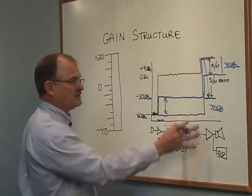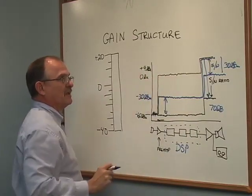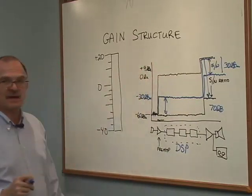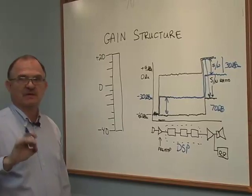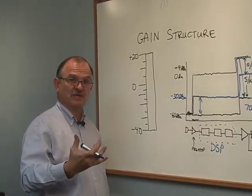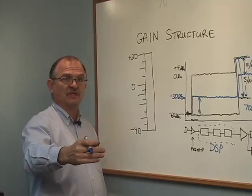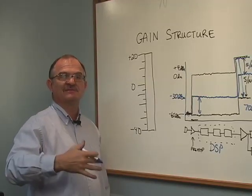What you want to do is get your signal up to 0 dBu or plus 4. Which do you pick? That depends on the weakest link in your chain. When you look at the specifications for various audio products, you want to look at the entire line of products within the system and find out what the maximum level is.